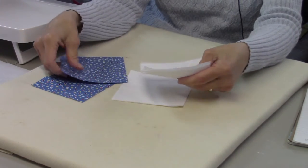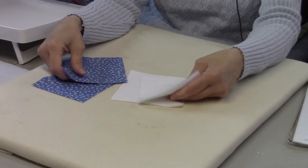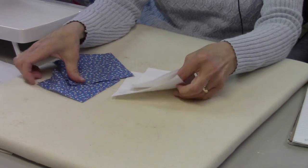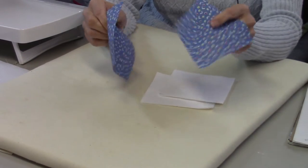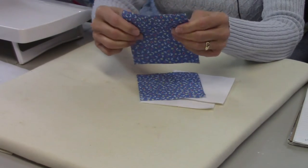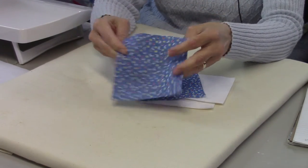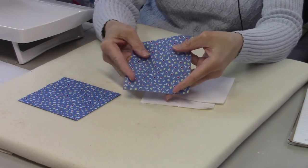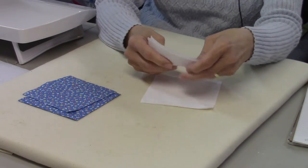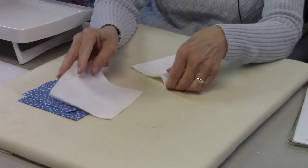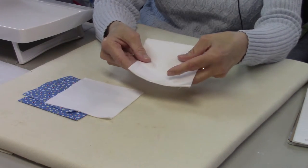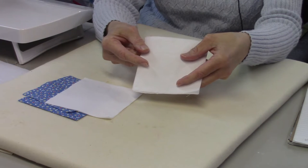The fabrics that you need are just your background and your main color, and you only need two different sizes. For your main fabric, you need two pieces that are four and seven-eighths of an inch and one that is four and a half. For your background, you need two that are four and seven-eighths and four that are four and a half inches square.